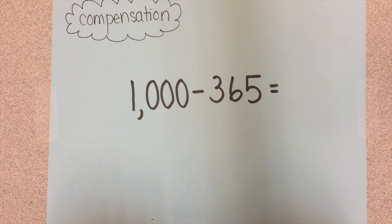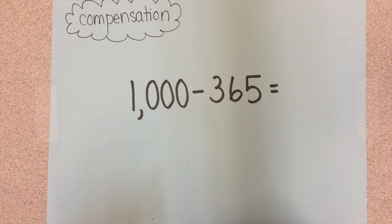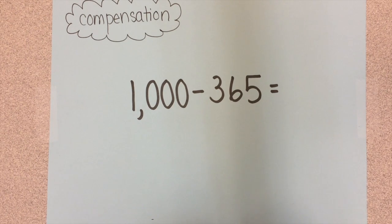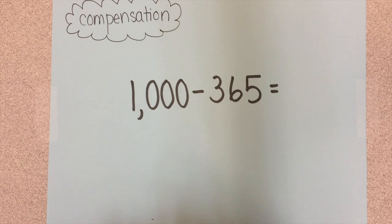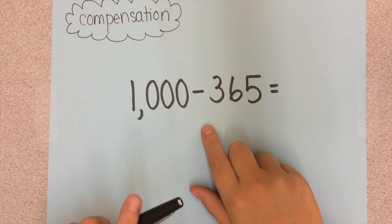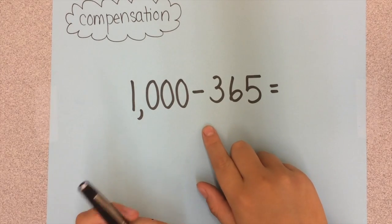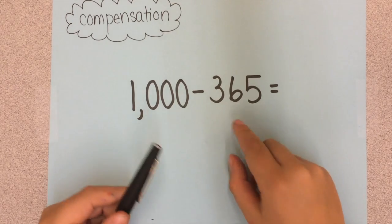Hi, this is Hudson from PS11. Today I'm going to teach you how to use compensation. Compensation is a strategy you can use when you are subtracting from a number that has zeros, like in this equation, 1000 minus 365.